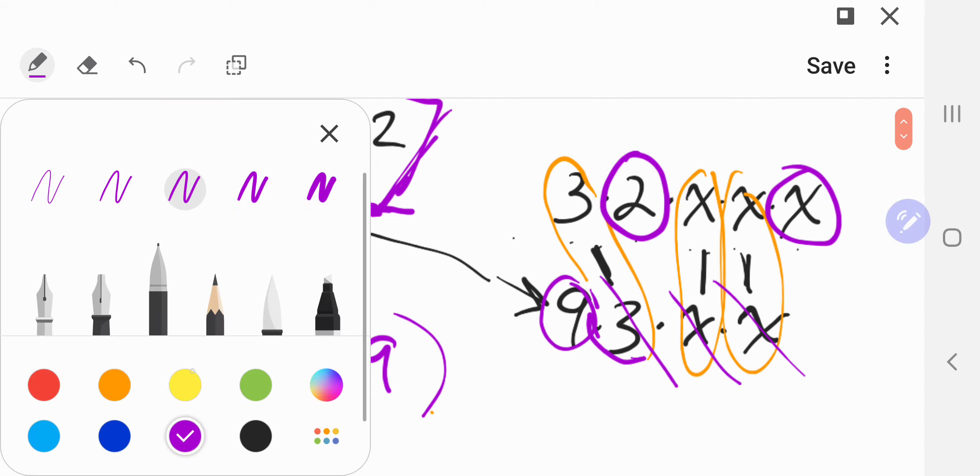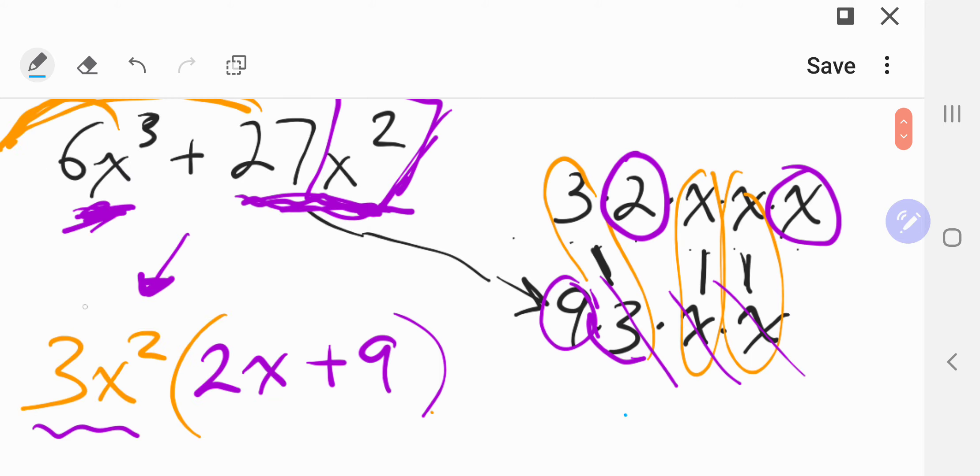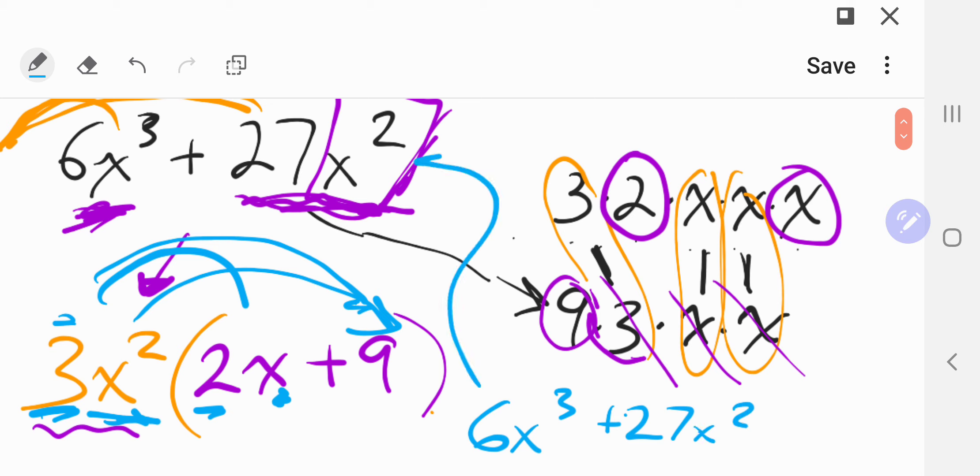To check this problem, you just distribute. Let's just do 3x squared times 2x. Well, we do the bigs: 3 times 2, that's 6. And all the x's: x times x times x, x cubed. And 3x squared times 9. We do the bigs: 3 times 9 is 27. And there's only this x squared that's rainbowing in. So there we go. That's where we started the problem. Ta-da!